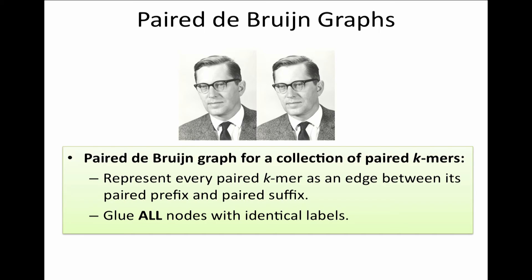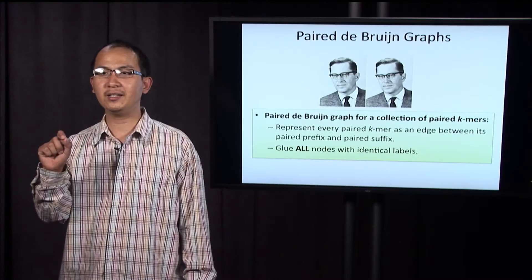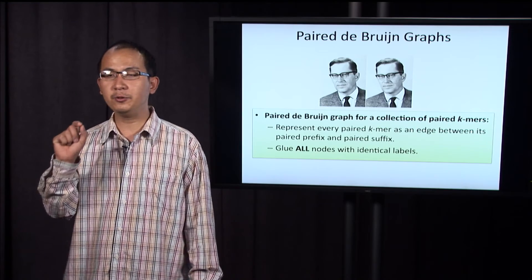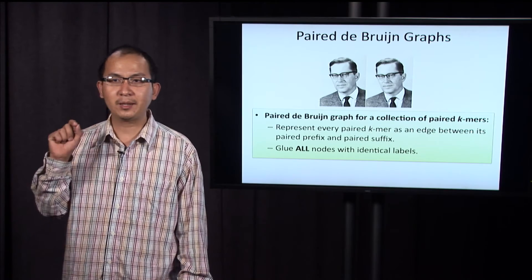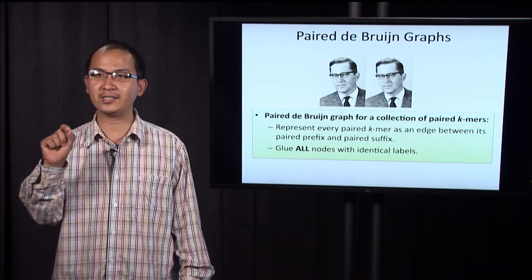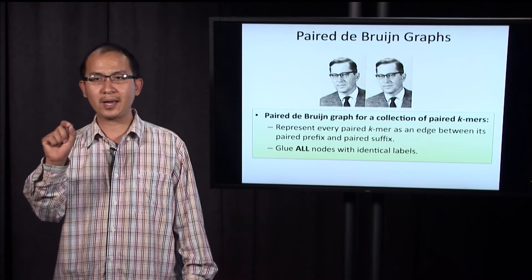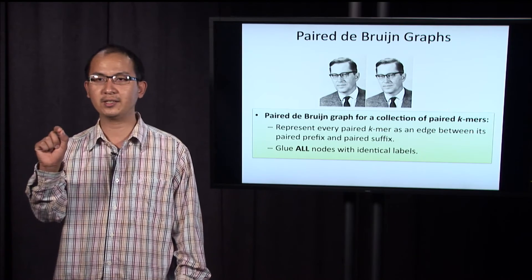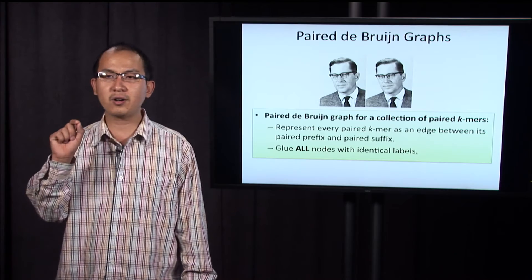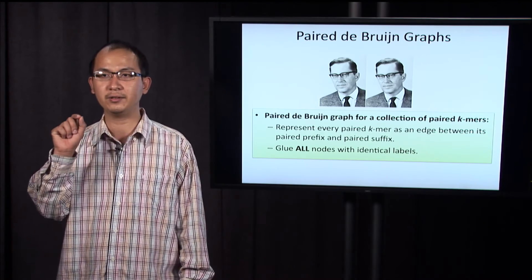Okay, to recap, the paired de Bruijn graph for a collection of paired k-mers can be constructed by two operations. First, represent every paired k-mer as an edge between its paired prefix and paired suffix. Second, glue all nodes with identical labels.